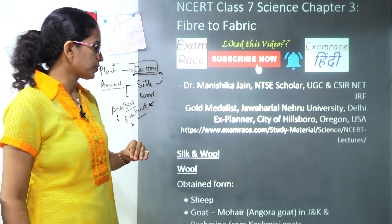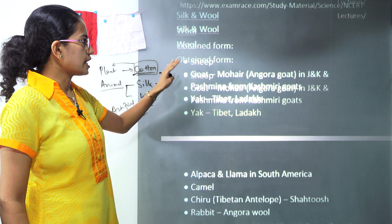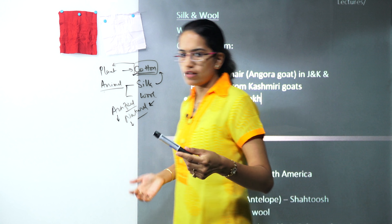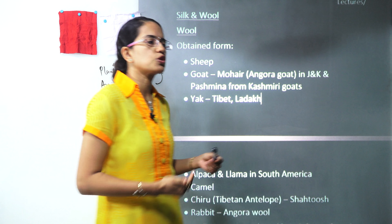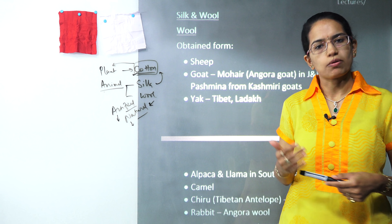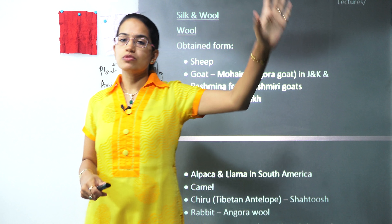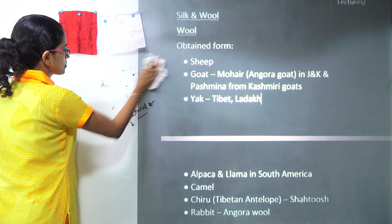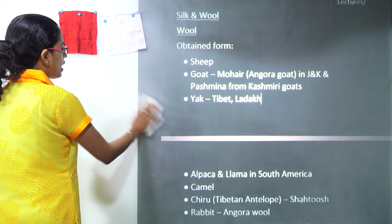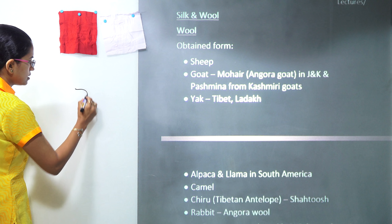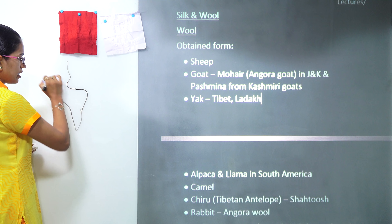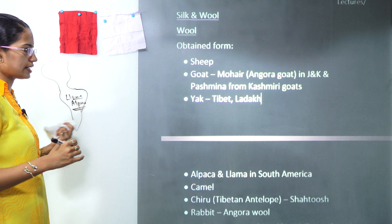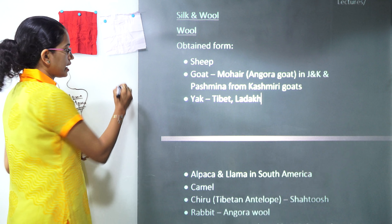Now coming on to the first topic for today, silk and wool. Under that we would first cover wool. Wool can be obtained from numerous animals. The most common you might have heard of is sheep, but besides sheep you have other animals from which you can obtain wool. A good example would be if you move to the continent of South America — let me draw a quick map — where you have alpaca and llama, from both of which wool is derived.